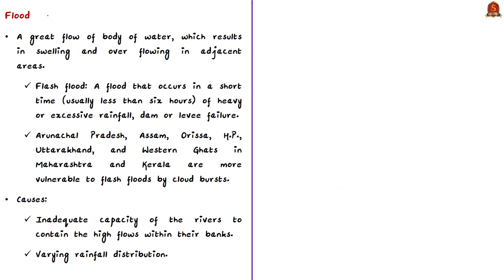Flooding refers to a great flow of water which results in swelling and overflowing into adjacent areas. Generally floods occur due to heavy rainfall in the catchment area, but sometimes also due to upstream discharge in a storage reservoir or dam failures. In this context, a flash flood occurs when a flood happens in a short time — usually less than six hours — of heavy rainfall or dam failures.